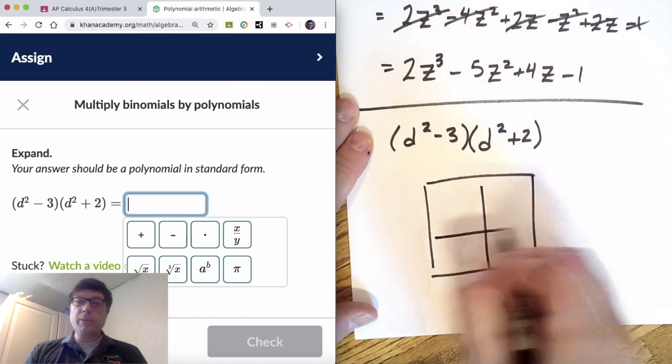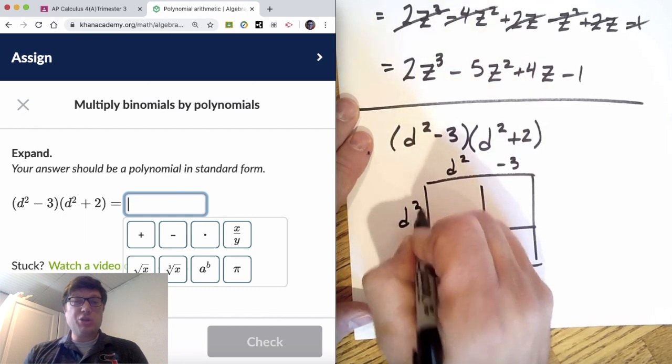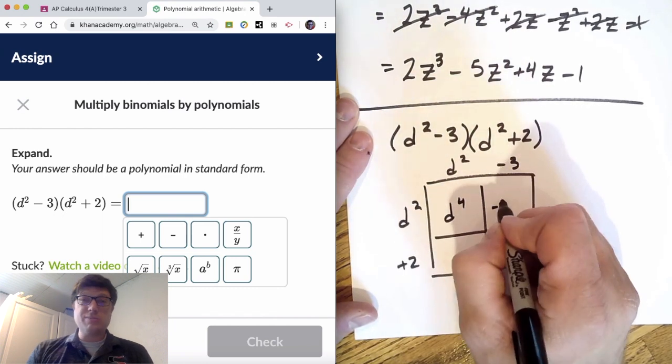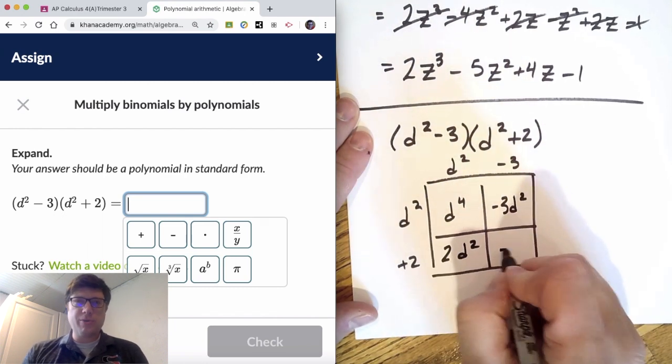With an area model, with a binomial that we're multiplying, the key trick to this question is knowing that d squared times d squared is d to the fourth. You add those exponents.